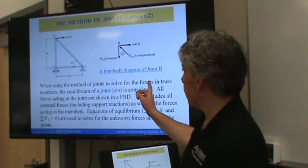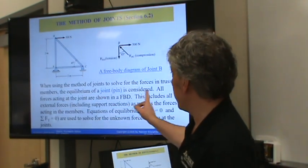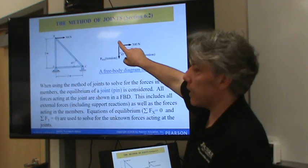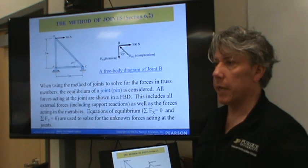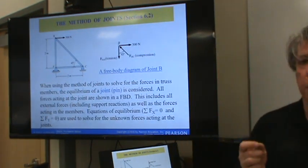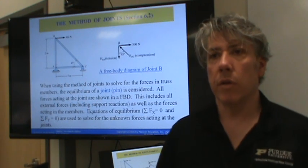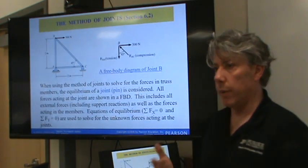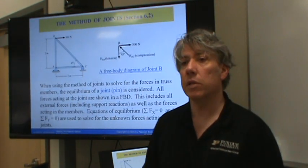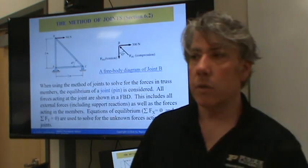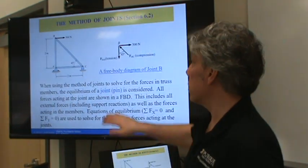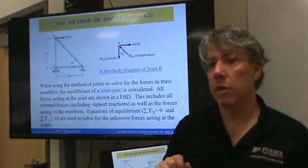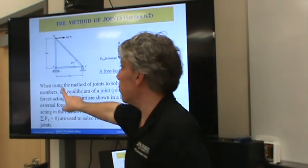When using the method of joints to determine all forces in truss members, the equilibrium of the joint and pin is considered. All forces acting at the joint are shown in a free body diagram. It's really important to make a free body diagram of each joint that you intend to analyze so that you can write sum of force in the X and sum of force in the Y equations to talk about what's going on in that pin. Notice there would be no sum of moments. So in the method of joints, we can't use the sum of moments when we're analyzing a single pin.